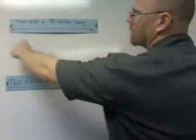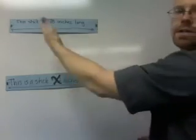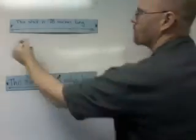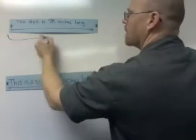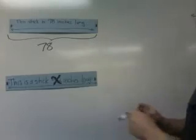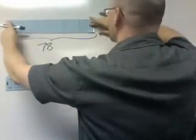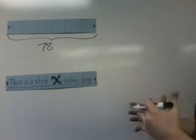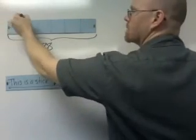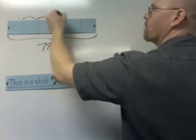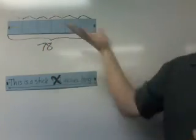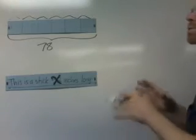All right, now here, we have a stick. And we're going to say that this stick is 78 inches long. So from here to here is 78 inches long. And for this problem, what we're going to say is we're going to cut that stick into six individual pieces. One, two, three, four, five, six. And they're equal sized pieces. All six of these pieces are going to be equal sized pieces.